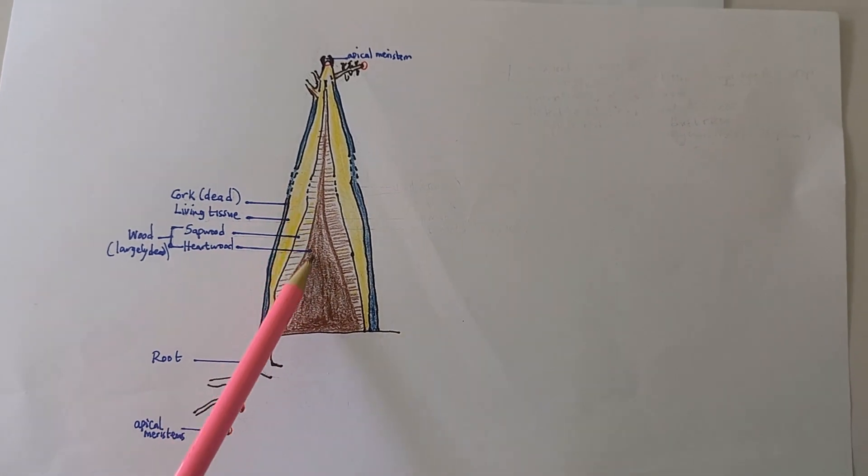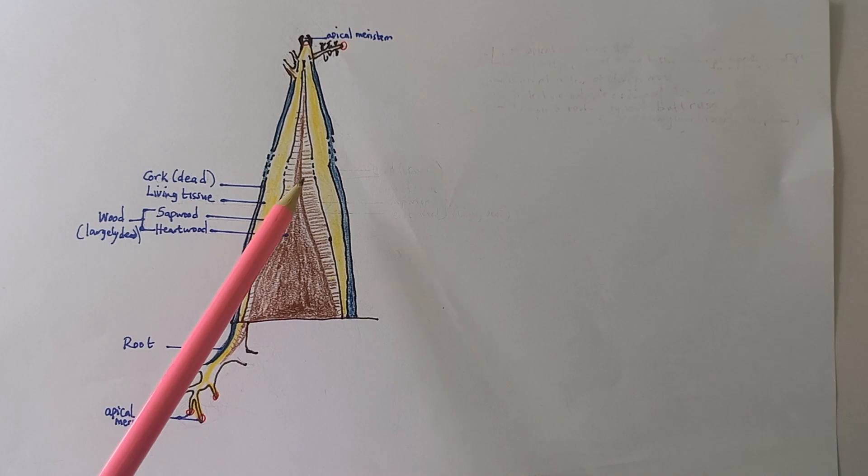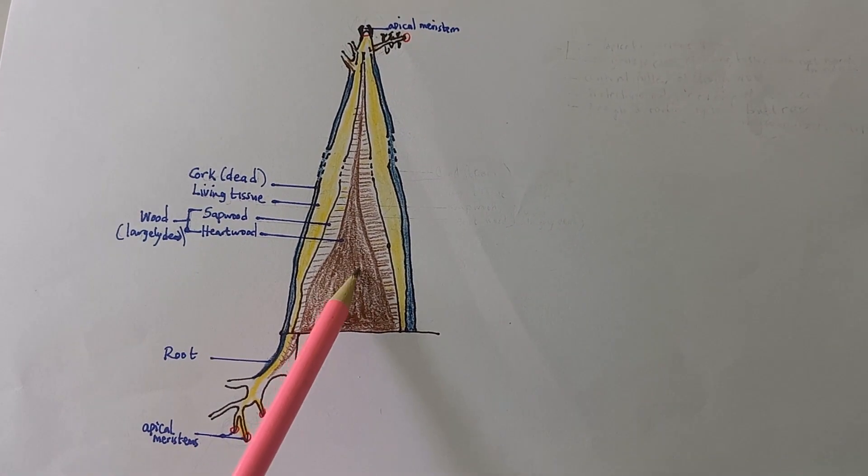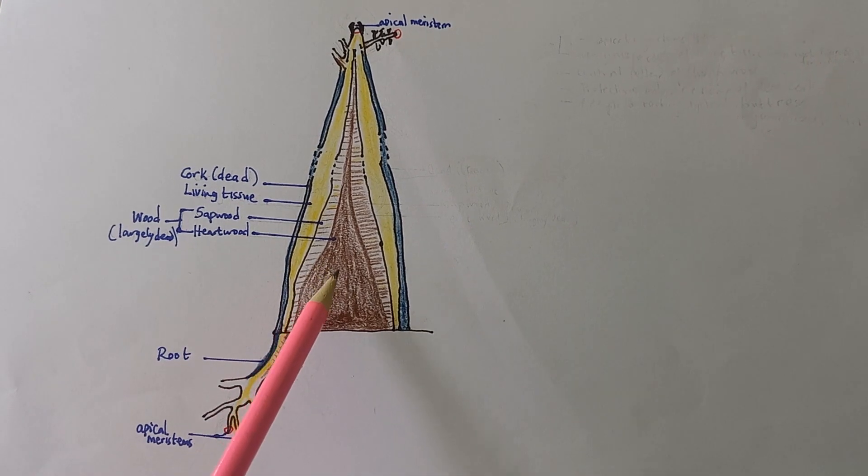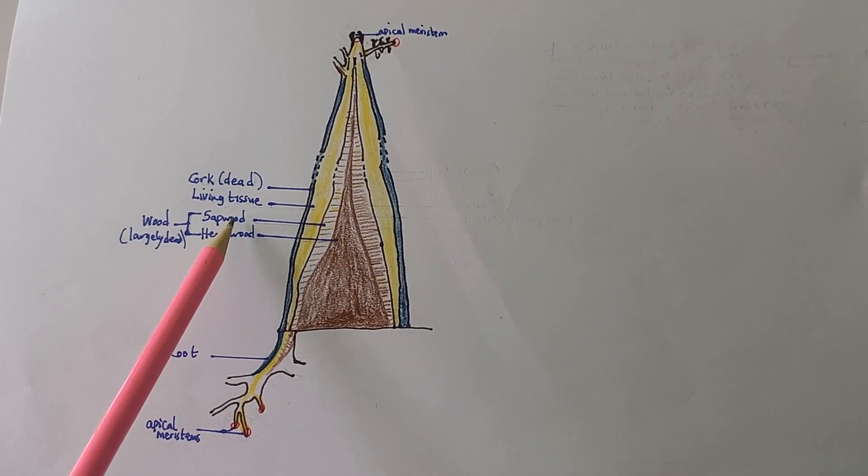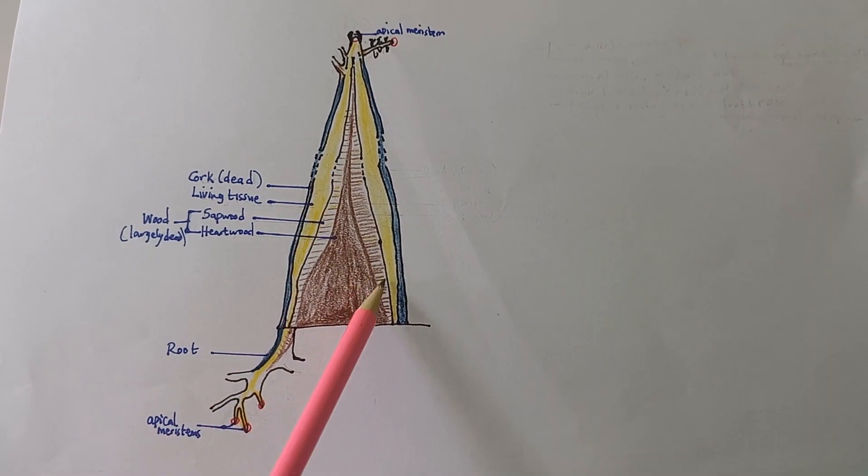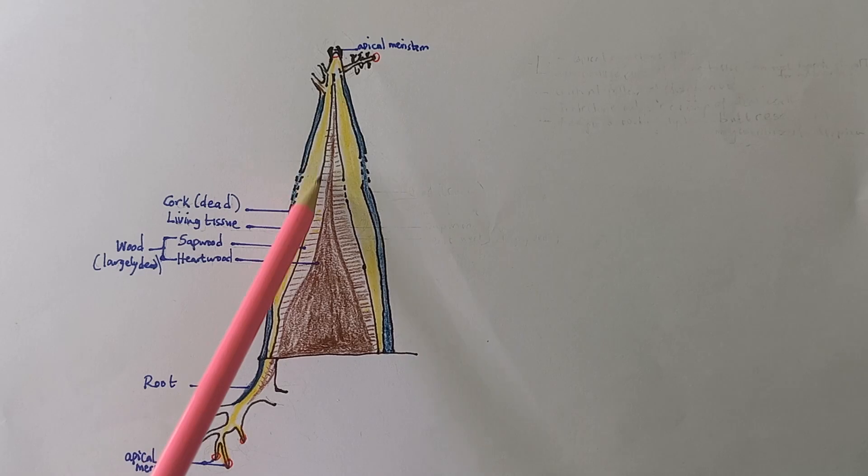Then there should be an inner pillar that supports the weight and the height of the tree. The inner pillar is the heartwood. The heartwood is a dead, tough structure. Then beside the heartwood, there's also the sapwood, which is also tough, but still has living tissues to do conduction of water.